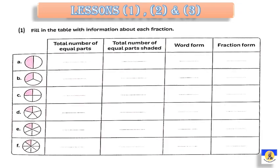عندنا هنا في Chapter 9 بيكلم معانا عن الـ fractions اللي كنا اشتغلنا فيها قبل كده في Primary 3. يلا بينا نشوف هنعمل revision عليهم ازاي in the first three lessons. أول حاجة عندنا هنا طالب مني في الـ shape اللي قدامنا — the circle — زي البيتزا موجودة معانا. طالب مني عدة حاجات: Number 1, عايزني أعرف the total number of equal parts, وبعدين عايزني أعرف the total number of equal parts shaded, وعايزني أعرف الـ word form وبعدين الـ fraction form.